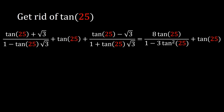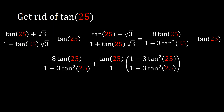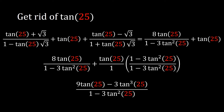We still need to add the middle tangent of 25 term. We multiply it by the common denominator over itself, giving tangent of 25 minus 3 tan-cubed of 25 over 1 minus 3 tan-squared of 25. Adding everything together yields 9 tan(25°) minus 3 tan-cubed(25°) over 1 minus 3 tan-squared(25°).